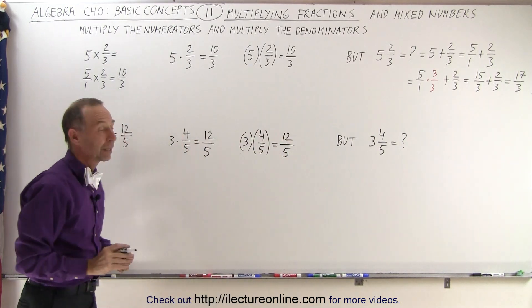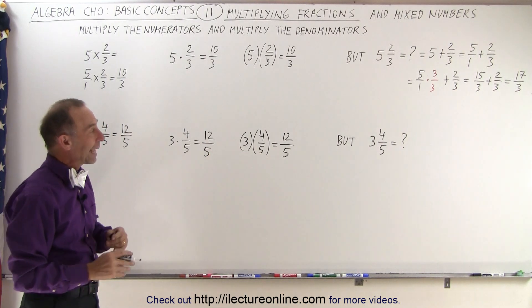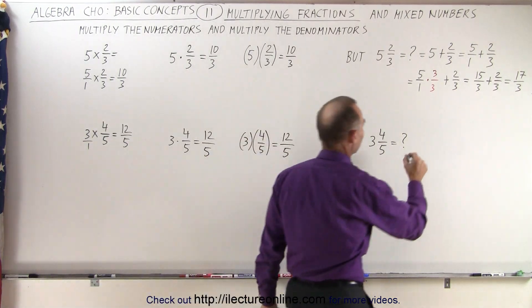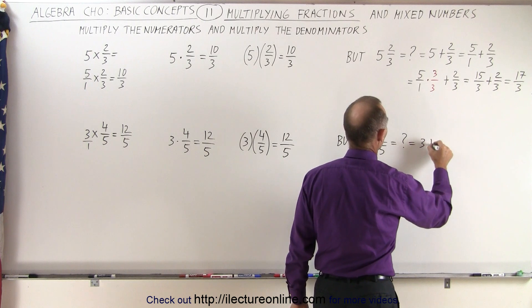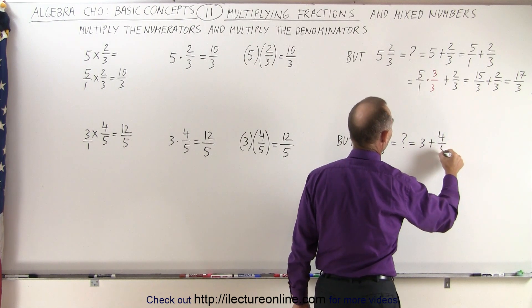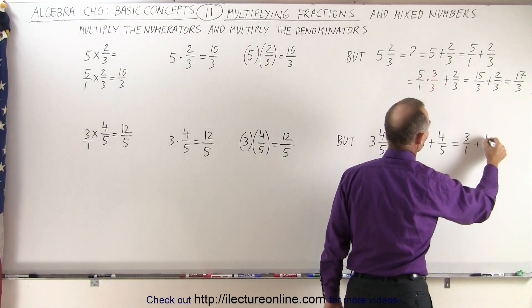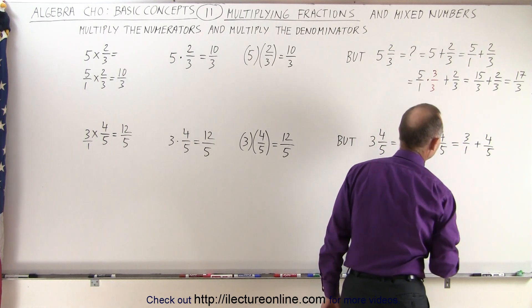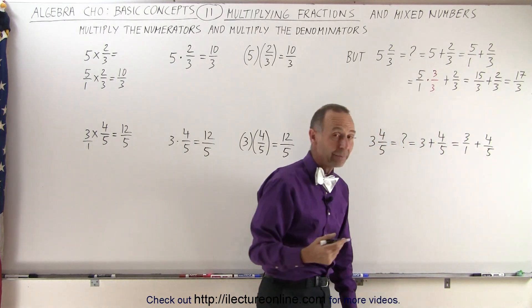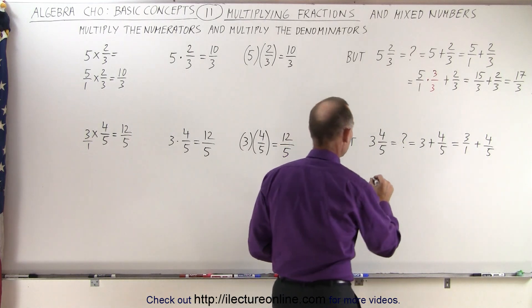3 times 4 is 12, we have a denominator of 5. These are all the same thing, but that is what we call a mixed number, which means that this is equal to 3 plus 4 over 5, or we can say this is 3 over 1 plus 4 over 5. And then of course we need to have the same denominators before we can add them.